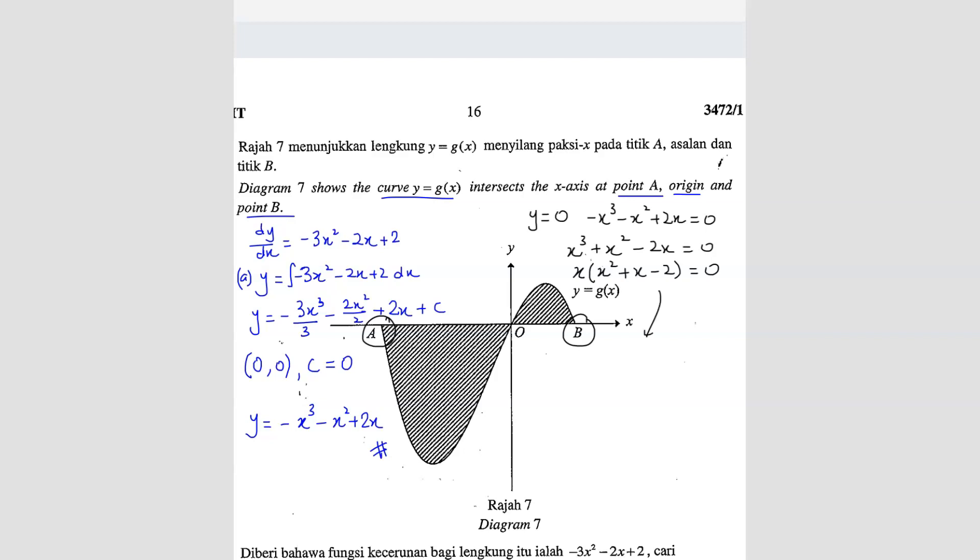Then we can factorize further x, x plus 2, x minus 1 equals 0. So from here, we know the intercepts will be x equals 0, x equals negative 2 and also x equals 1. So that means this coordinate here is going to be negative 2 and this coordinate here will be 1. Here will be 0.